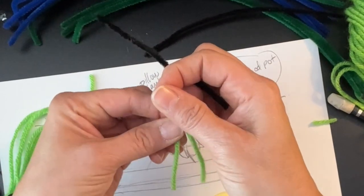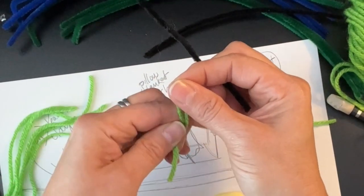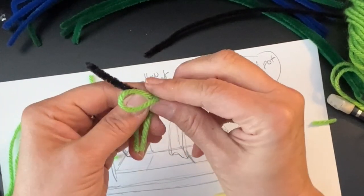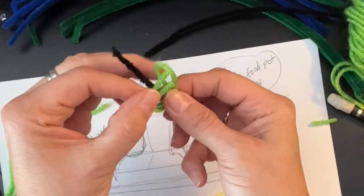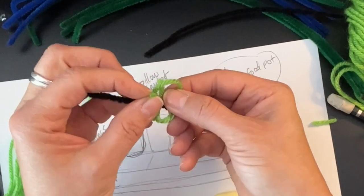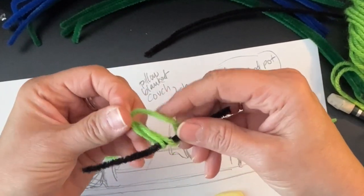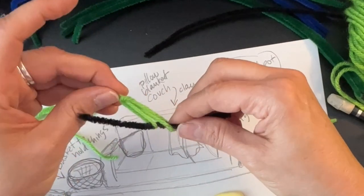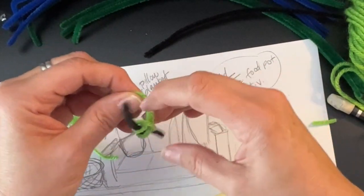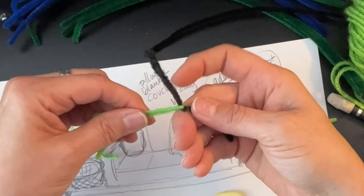You fold the yarn in half, put the loop on one side of your pipe cleaner and stick the ends through the little loop, and then pull it. You don't have to really tie. If you make it uneven, you can always trim the yarn later. So you just want to pull that through, and then I did that with all the pieces.